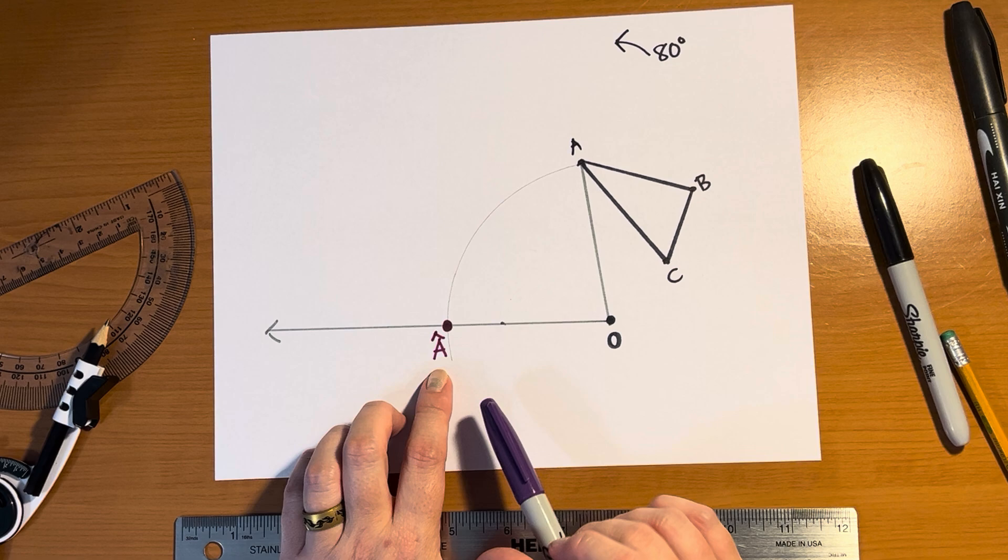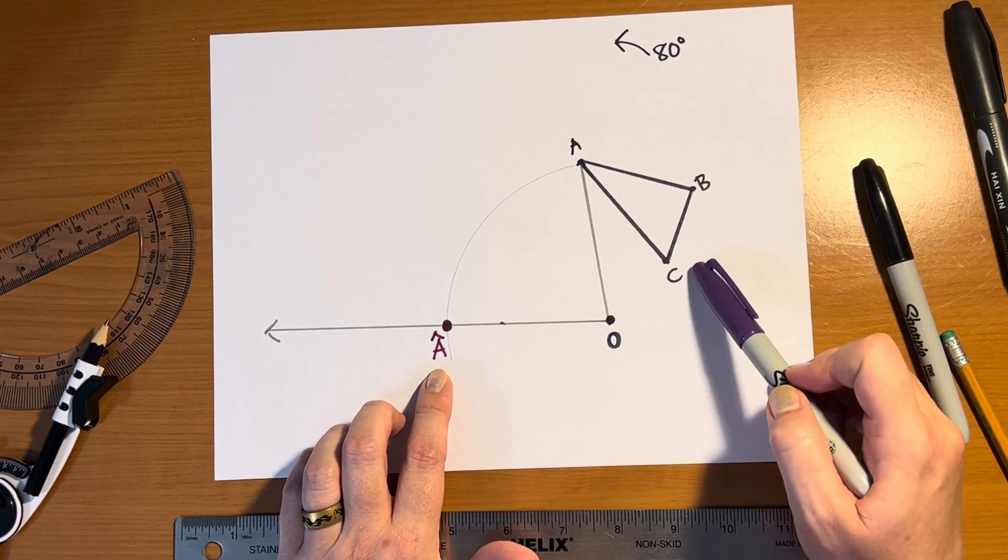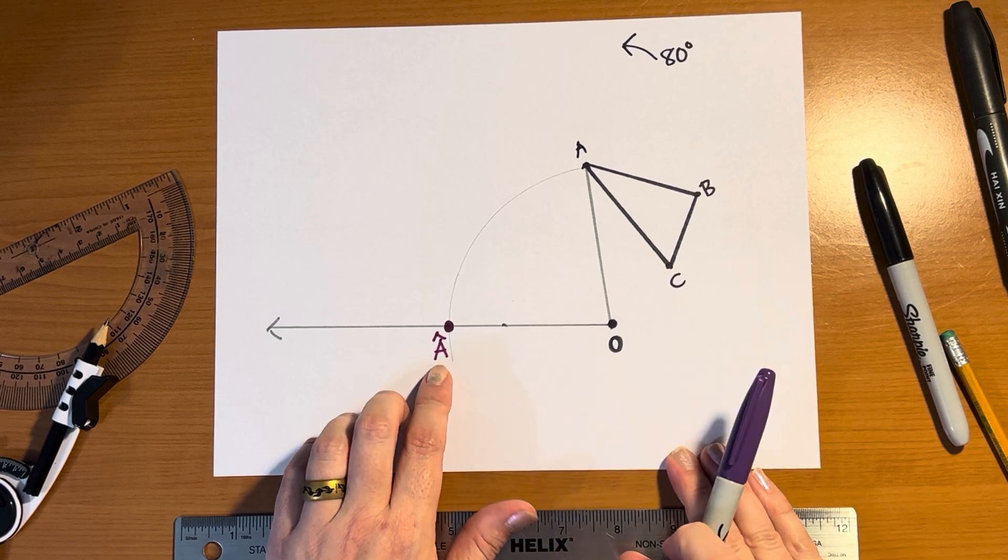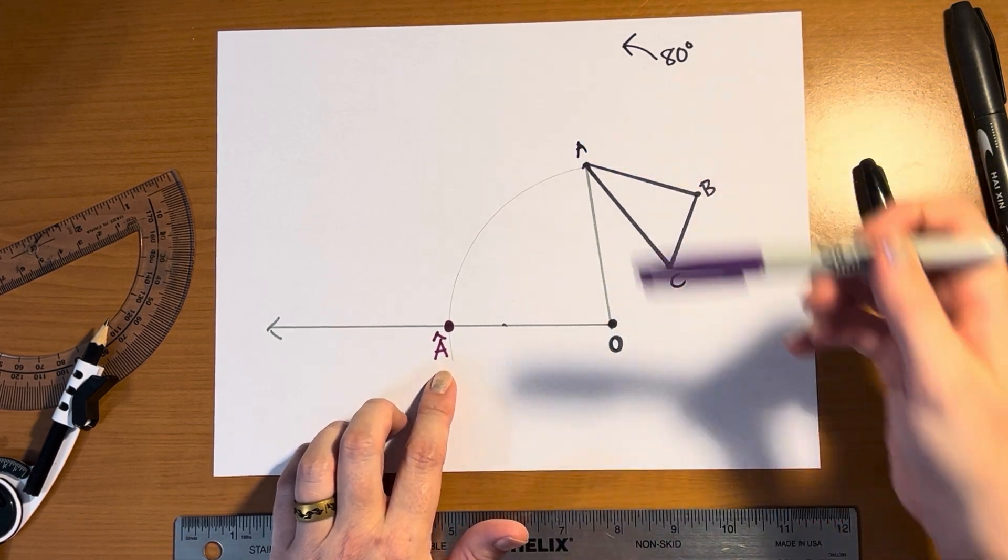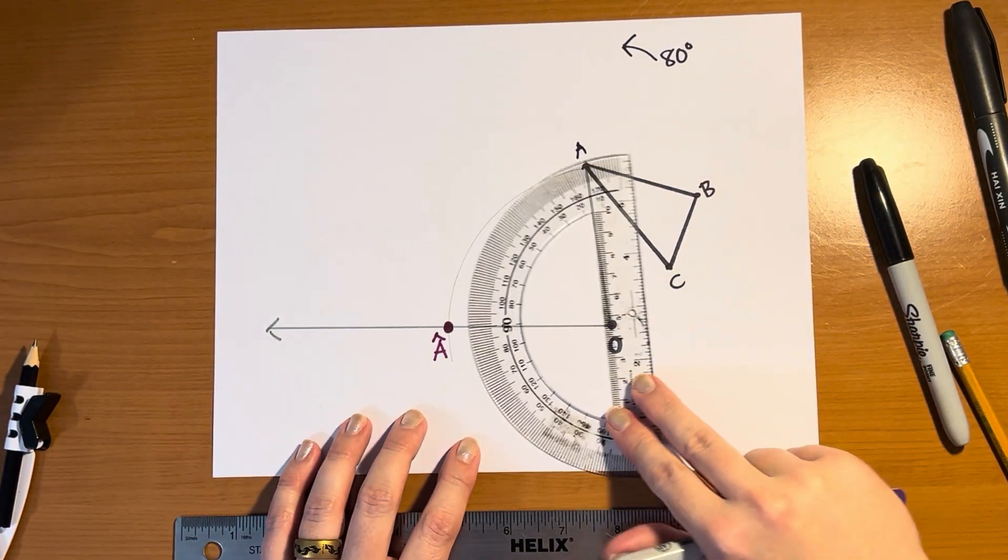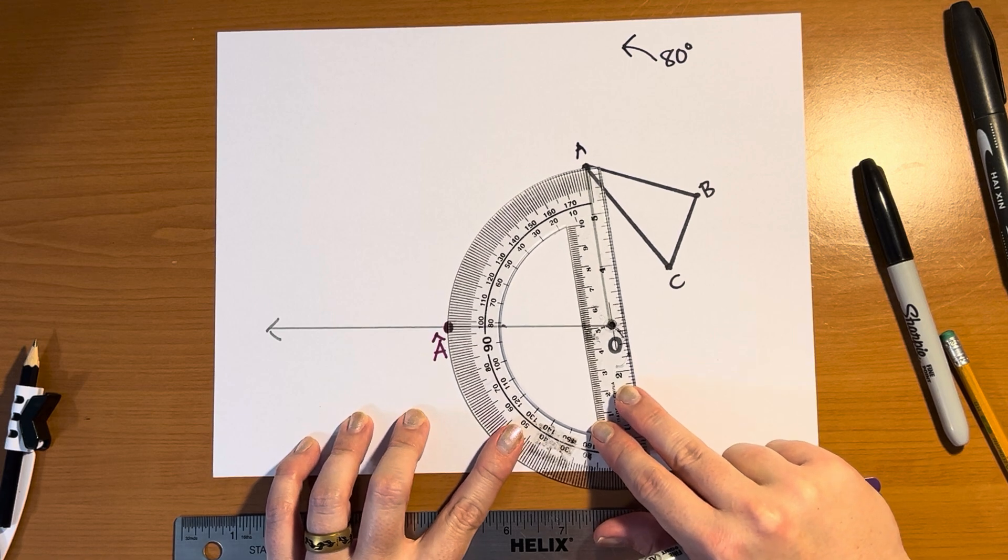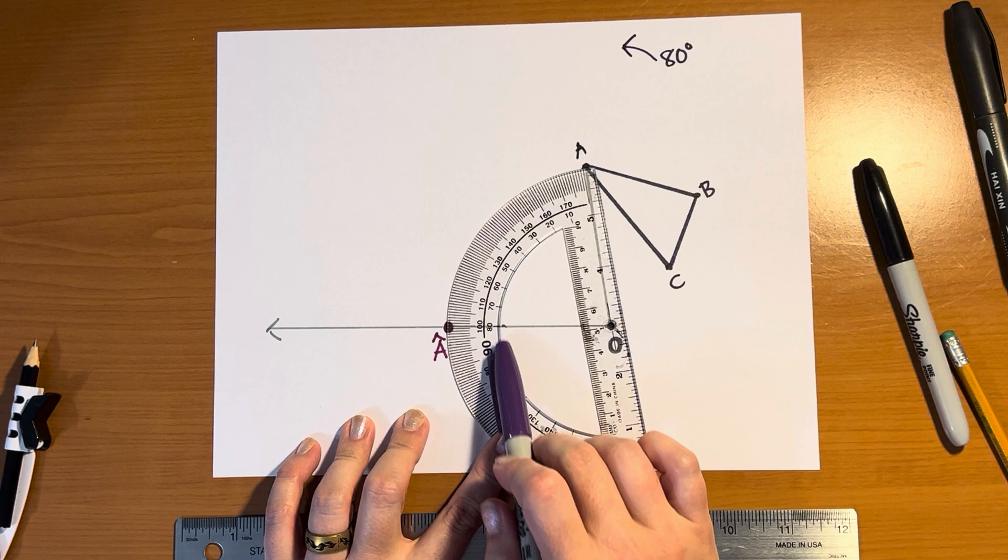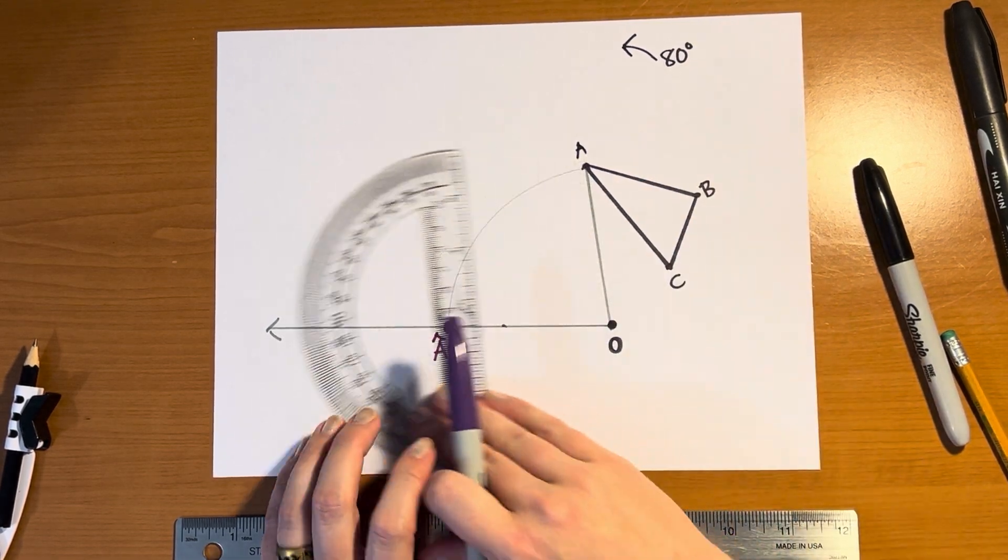You can call it anything else that you want to. Probably I wouldn't use B or C or A or O since those are already used. But anything else will do. I like A with a hat on it. And now I can see that if I measure with my protractor, the angle from A to O to A with a hat on it is 80 degrees. So this point A has been rotated